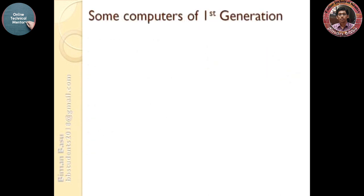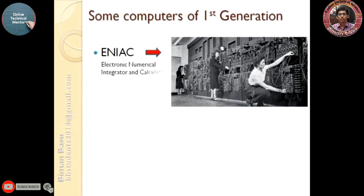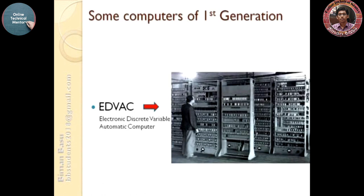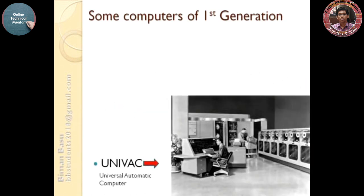Some computers of the first generation: ENIAC (Electronic Numerical Integrator and Calculator) — as you can see on the right-hand side, people are moving around and controlling the computer. The second is EDVAC (Electronic Discrete Variable Automatic Computer), also a very big computer. UNIVAC (Universal Automatic Computer) also required more than one person to control it.